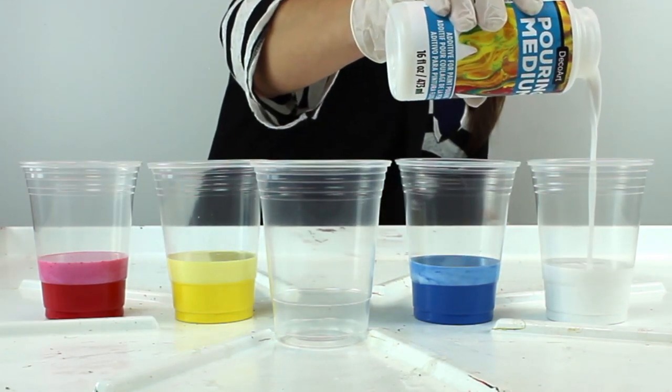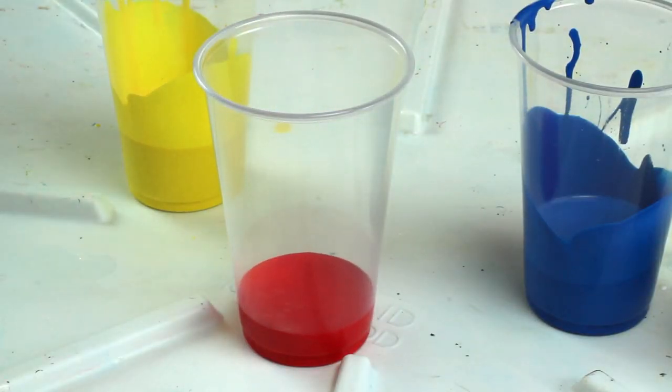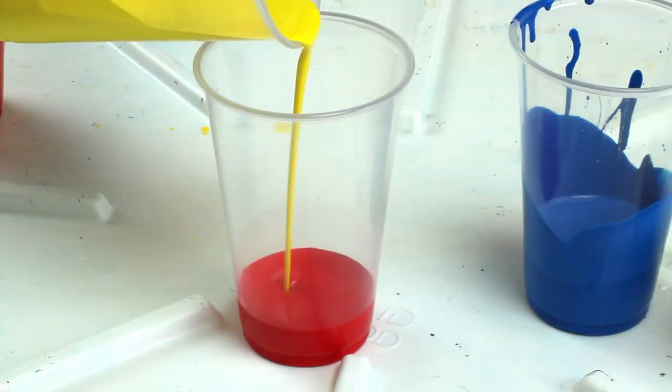Use a stir stick to mix well. Pour your mixed paints into a single cup. Pour paint slowly to avoid over mixing the colors.